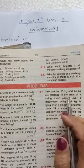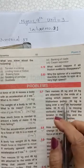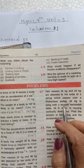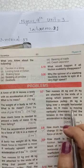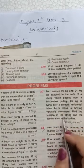Two masses, 26 kg and 24 kg, are attached to the ends of a string which passes over a frictionless pulley. 26 kg is lying on a smooth horizontal table. 24 kg mass is moving vertically downward.